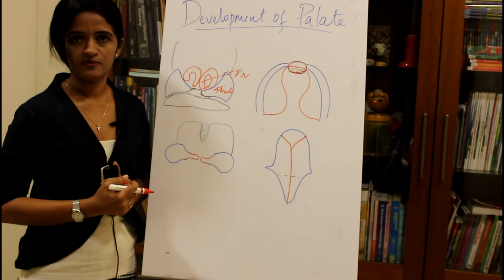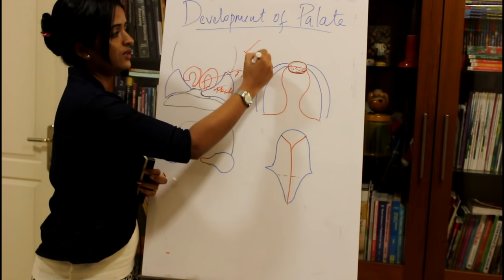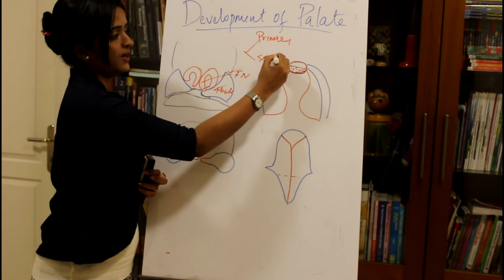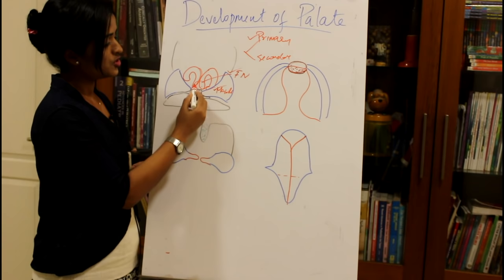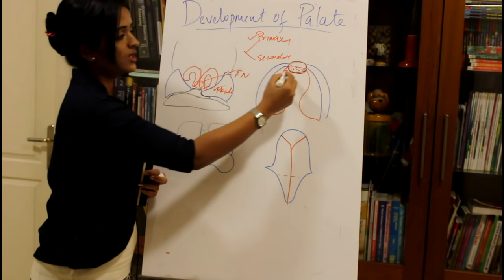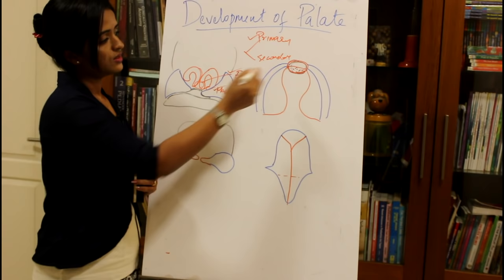The development of the palate can be considered as derived from two parts: the primary palate and the secondary palate. The primary palate is formed by the fusion of the two medial nasal processes, which are derived from the frontonasal process. This fused portion of the medial nasal processes is what gives rise to the primary palate.